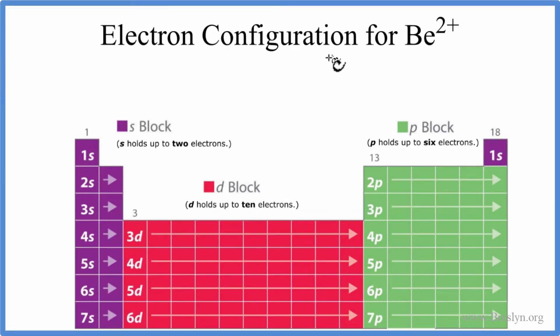In this video we'll write the electron configuration for Be2+, that's the beryllium ion. So we'll start out by writing the electron configuration just for Be, that's the neutral atom.